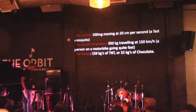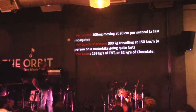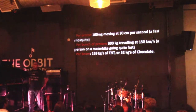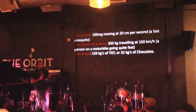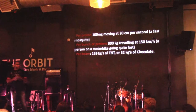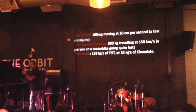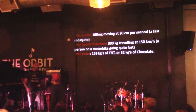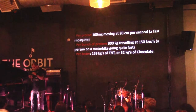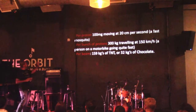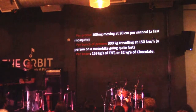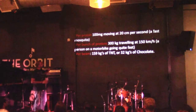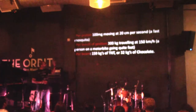Per proton, we have the equivalent energy of 100 milligrams moving at 20 centimeters per second — like a really fast mosquito. The protons don't go around one at a time because we can't aim them that well. We send them around in bunches with about 10 to the 34 protons in each bunch, and the energy in each bunch is equivalent to a person on a motorbike — about 300 kilograms at 150 kilometers an hour. Per beam it's the equivalent energy of 159 kilograms of TNT or 32 kilograms of chocolate.